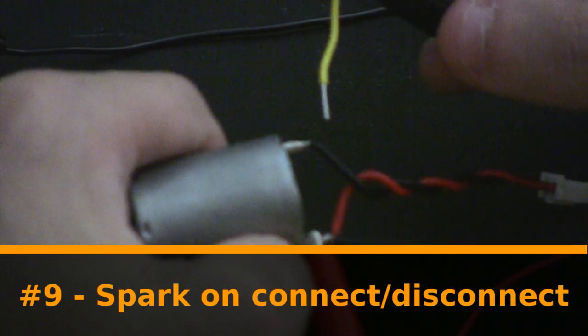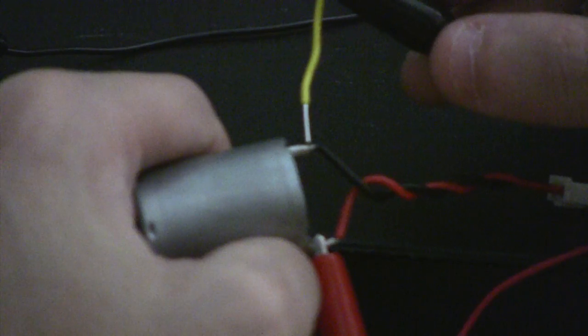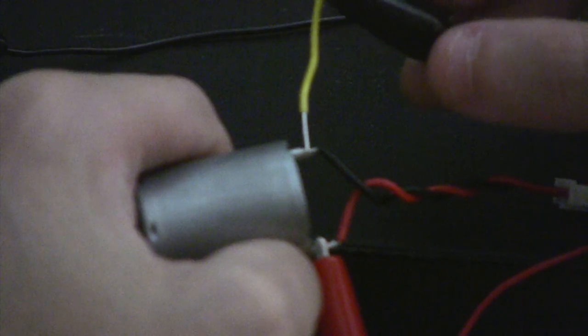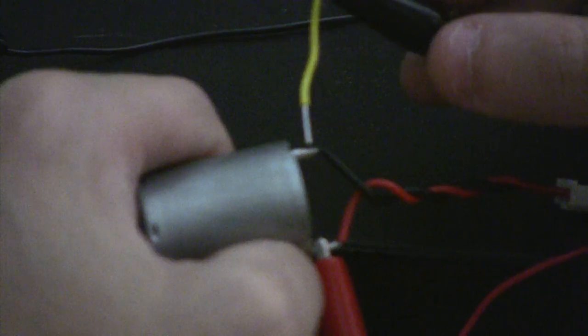And finally, number nine: When I touch the wires together, I get a small spark. It might be tough to see on the video, but it's there. Even a small spark means big voltages, hundreds or thousands of volts.